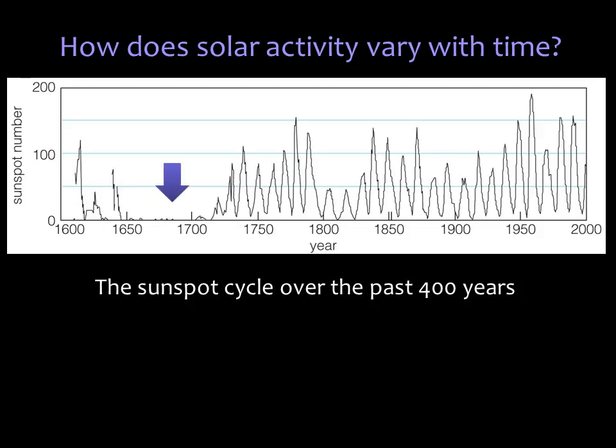Between 1645 and 1715, there were virtually no sunspots. This so-called Maunder Minimum could be part of a longer-term cycle, or it could just be a fluke.